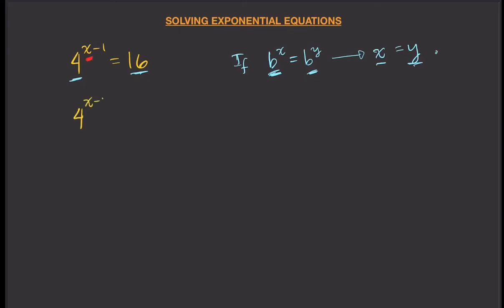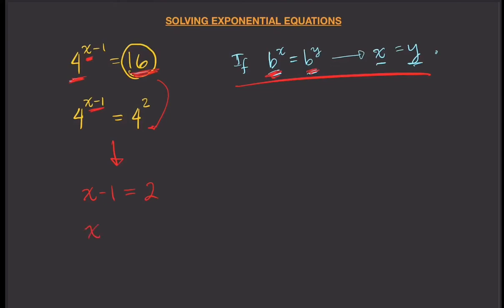So how do we do that? Well, we could write 4 to the power of x minus 1, and I could write 16 as 4 squared. So what I did was I just wanted my bases to be equal. If I have a base of 4, then I want my base here to be 4, and thankfully I can just write that as 4 squared. Now following this property, I can write x minus 1 — because x minus 1 is my exponent — equals positive 2. Then I can just solve this equation: x equals 3. And that is my solution.